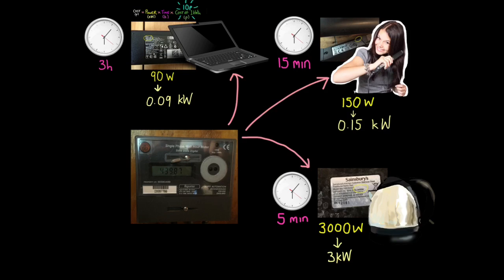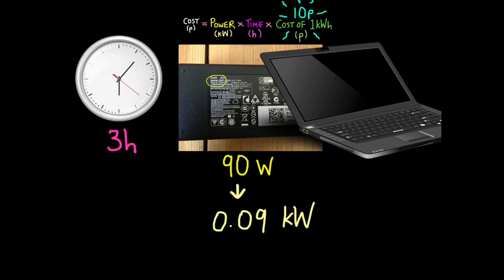So every electrical appliance you own has a sticker on it with a power rating on it in watts. Now I've just run around my home snapping photos of various appliances in my home with their power ratings. And this will give you an idea of how expensive these items are to run. So let's look at the laptop first. Now you can see here that the power says 90 watts, that's the power rating. Now if you remember power in our formula has to be in kilowatts, so we have to turn 90 watts into kilowatts. To do that we just divide by 1000. So watts to kilowatts is simply dividing by 1000. And there we will get 0.09 kilowatts.